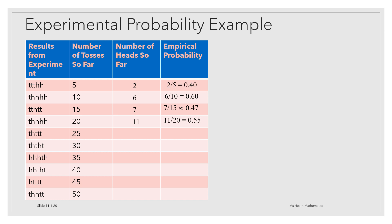Continuing in this way, we see after 25 flips, we have a probability of 0.48. After 30 flips, 0.47. After 35 flips, 0.51. After 40, 0.53. After 45, 0.49. And after 50, 0.48. Do you notice any kind of trend in the empirical probability values as the number of flips gets larger?